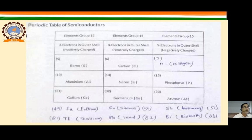For Group 13 elements such as aluminum and gallium used as impurity, their outer shell has only 3 electrons, so they form 3 electron bonds but there is 1 electron deficiency. This deficiency of an electron is known as a hole.